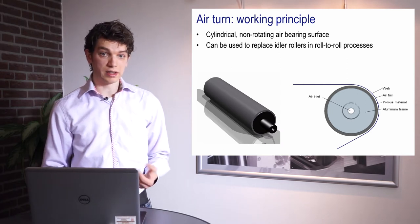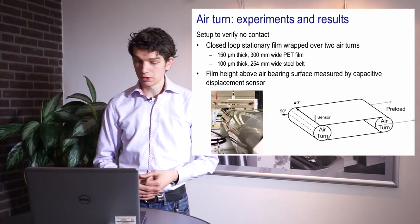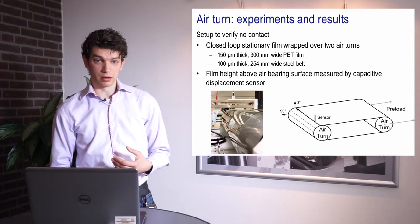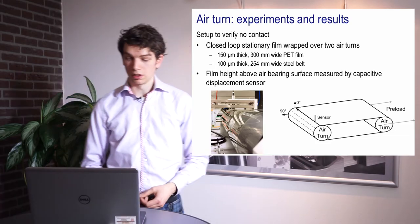To validate this technology for use in roll-to-roll processes, a test setup was developed where a closed loop film was wrapped over two air turns, with one air turn used to create tension in the web. A PET film and also a steel belt were used to compare the two. A capacitive displacement sensor was used to measure the fly height of the film above the air bearing surface — in other words, the thickness of the air cushion below the film — in order to validate that there is actually no contact between the film and the surface.